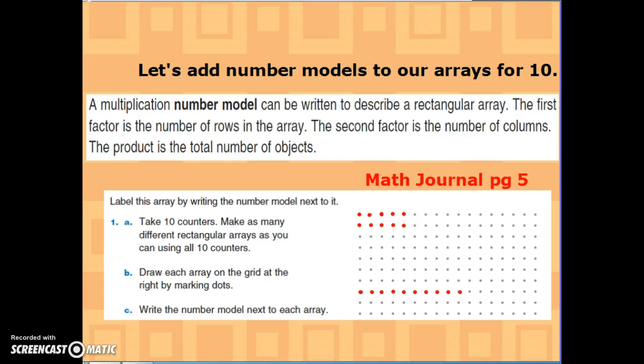So remember, the number model, the first number is the number of rows. So in this array, I have two rows. One, two. I have five in each row. So my second number, my number model, and your number model is really just a multiplication problem.